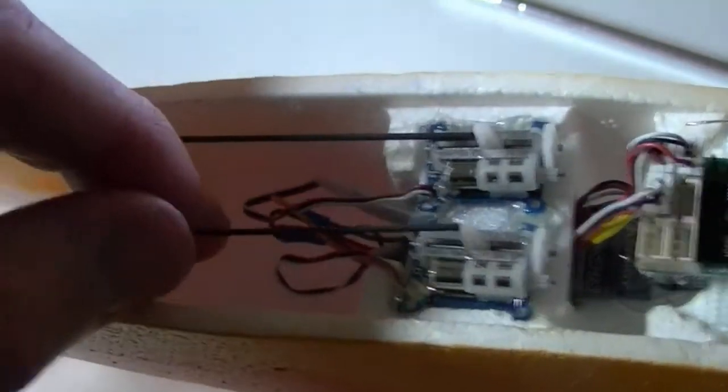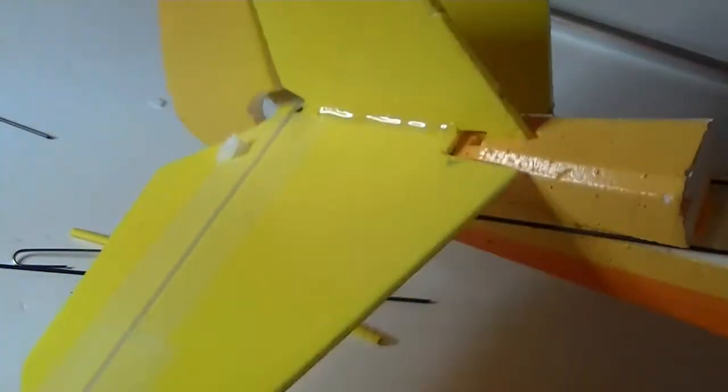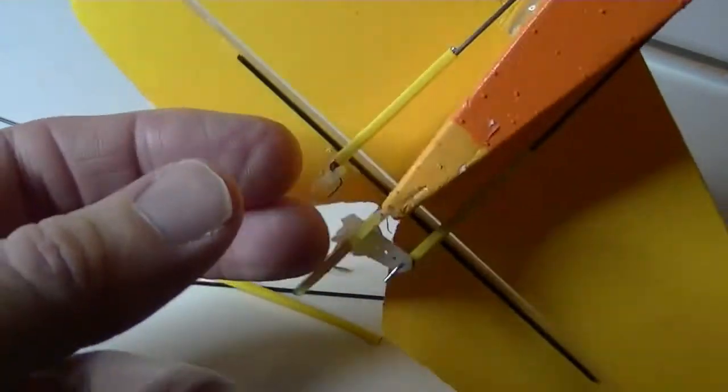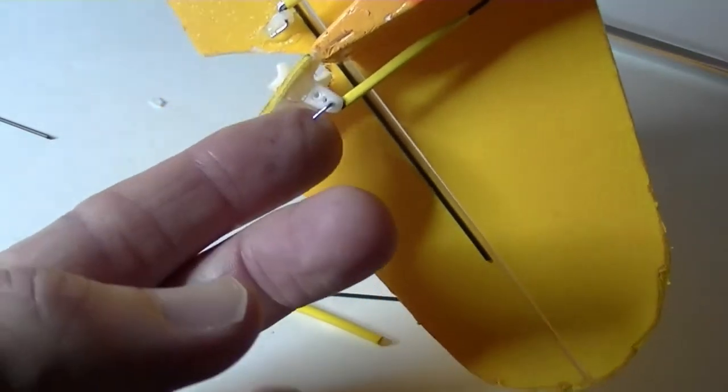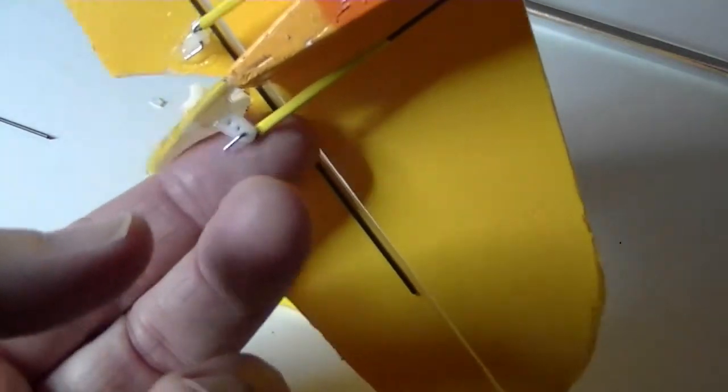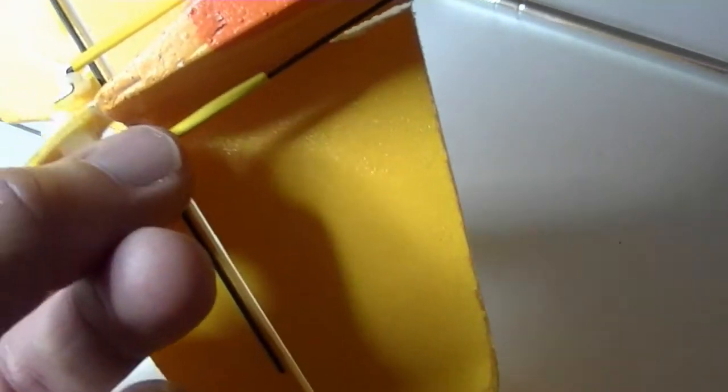I'm going to put it on the end of the control rods which are already in the body of the plane right here. That one controls the elevator when I push it back and forth, and the other one controls the rudder. I've already got Z-bends on there. Z-bends are going through my control horns here that are made out of a servo horn. You can see where I've already heat shrunk them onto the carbon fiber rods.